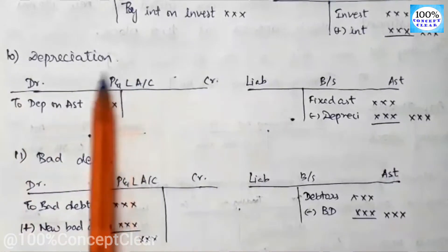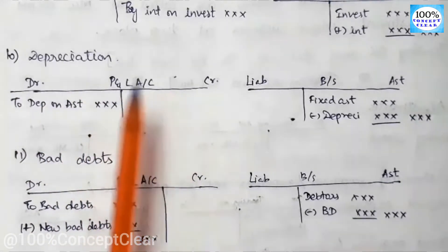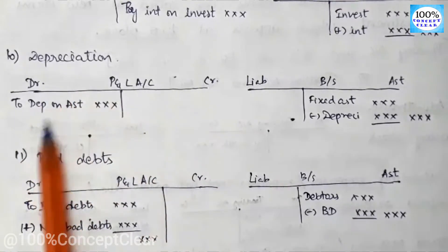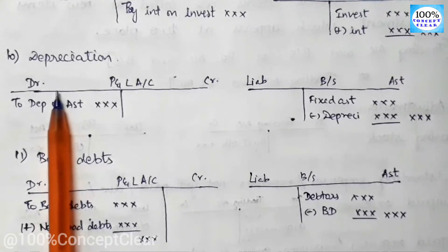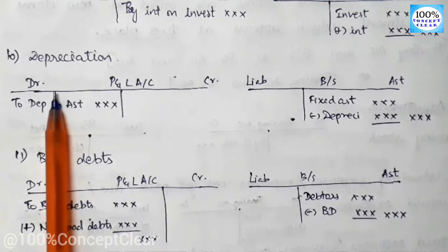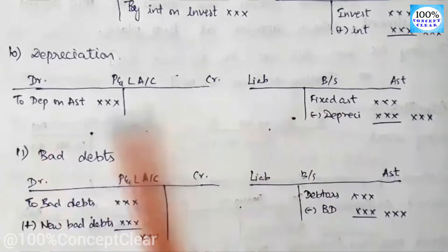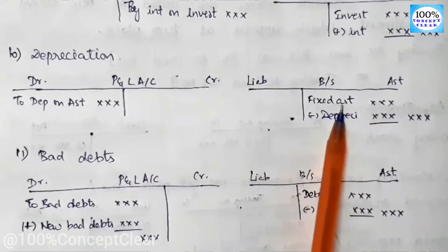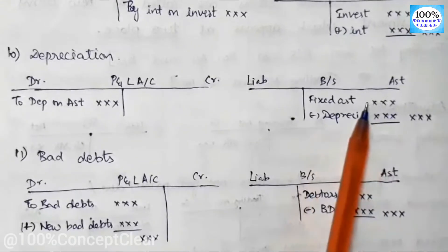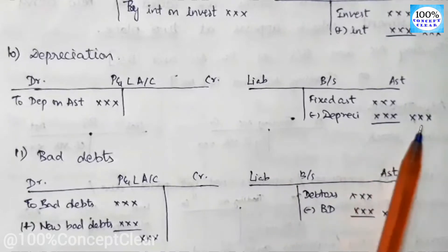The next adjustment is depreciation. Depreciation is on fixed assets — we have to show it on the debit side. Depreciation appears in the P&L account as a debit entry. On the balance sheet, we minus the depreciation from the fixed asset amount to show the reduced value of the fixed asset.